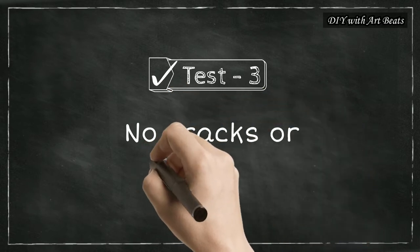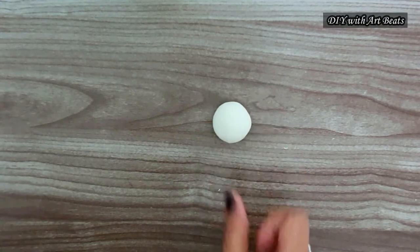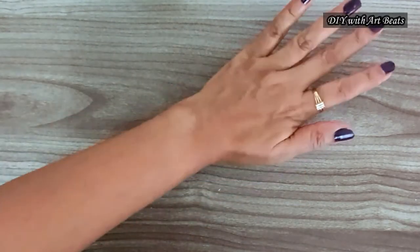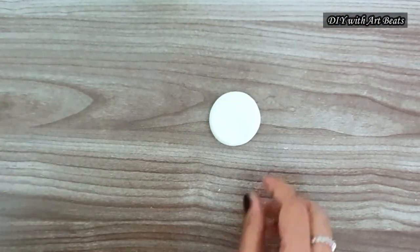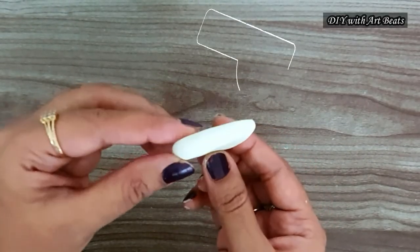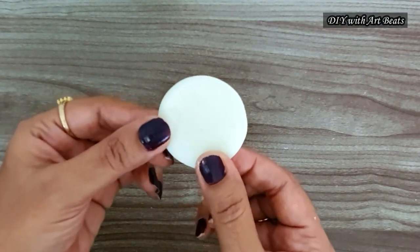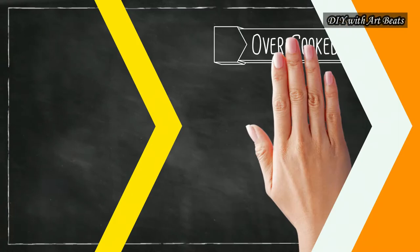Test number 3. No cracks or creases. Make a round ball of the clay and press it like this with your hand or any object. The flattened piece should not have any cracked edges or creases on it. So by doing all these 3 tests you can check the consistency of your clay.